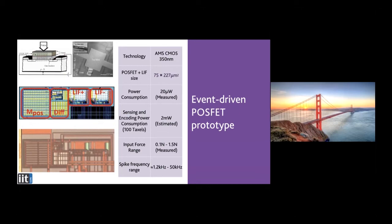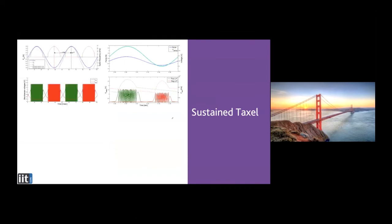We implemented this in a prototype chip. Here you can see the layout of the chip, with the phosphate transistor and the circuits implementing the leaky integrate-and-fire neurons, and here is a picture of the produced chip. The power consumption is very small — about 20 microwatts per taxel — so for 100 taxels we still have very low power consumption. We also have very low latency because we don't have to wait for the clock: as soon as there is a change, it is communicated to the processing unit of the robot.